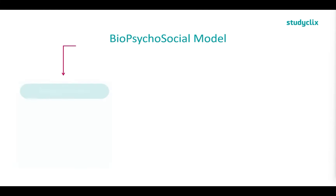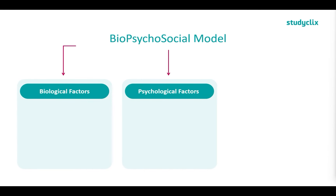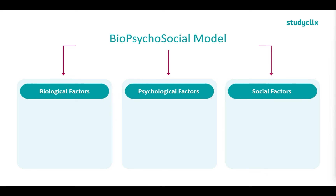Now we're going to look at the biopsychosocial model. As you can guess from the name, it is made up of biological factors, psychological factors, as well as social factors. This is a holistic way of looking at someone's life and seeing what factors they have in these three main categories.